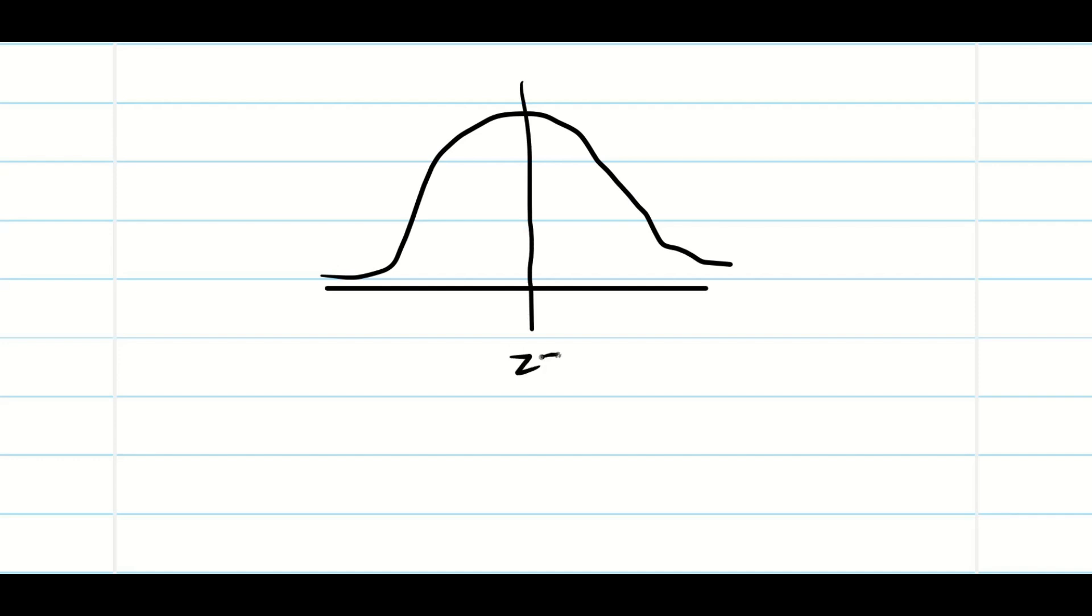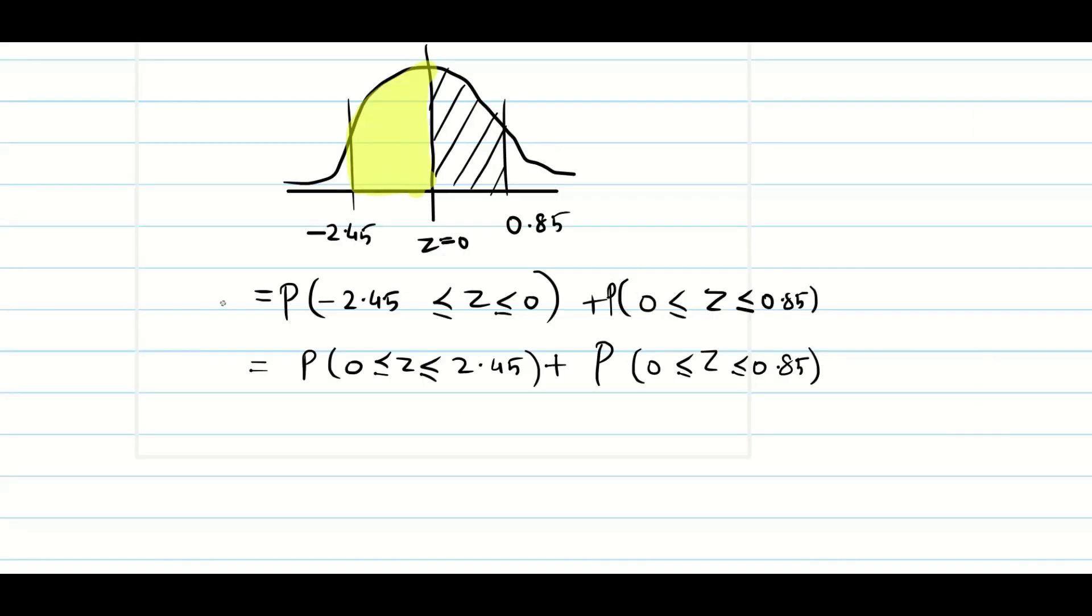Substitute the value 120. When you transform, it will become Z. When you put 120, you will be getting minus 2.45. When you substitute 160, 160 minus 150 by root 150 is going to be 0.85. Shade the region and find the solution. One side is going to be 0.85, the other side is going to be minus 2.45. Just see the table and find both the area. Now the problem is very simple.